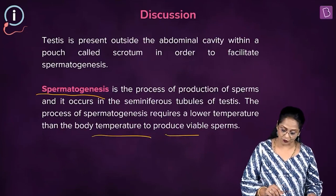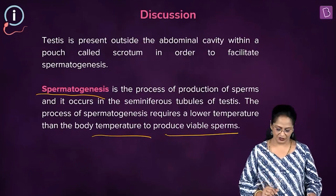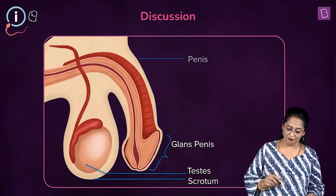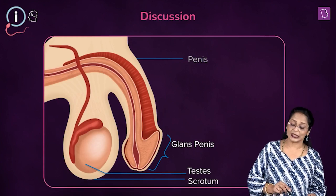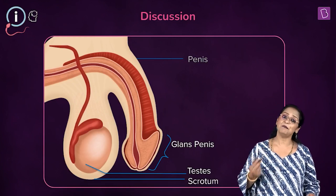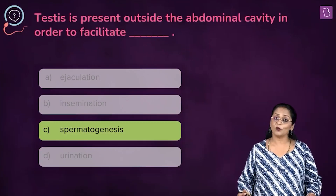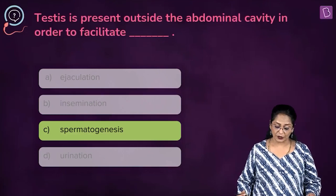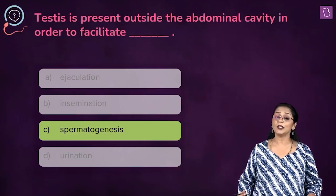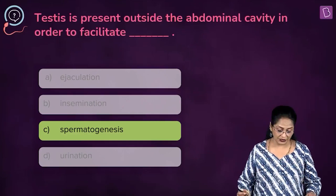The body temperature to produce viable sperms is maintained at a lower temperature. This image shows the male reproductive system — you can see the testis in the sac-like structure called the scrotum and the penis is the male external genitalia. So in this question, testis is present outside the abdominal cavity to facilitate ejaculation? Ejaculation is the release of sperms during copulation through the penis.